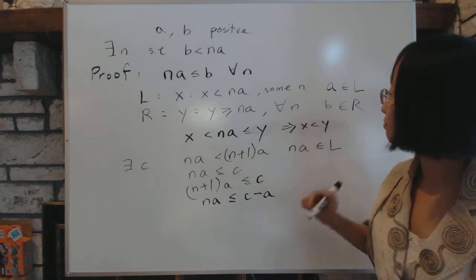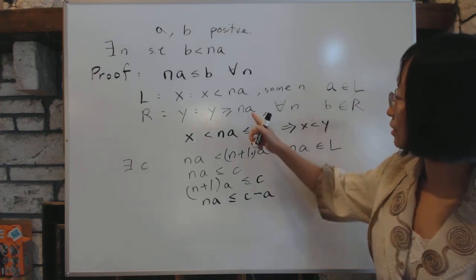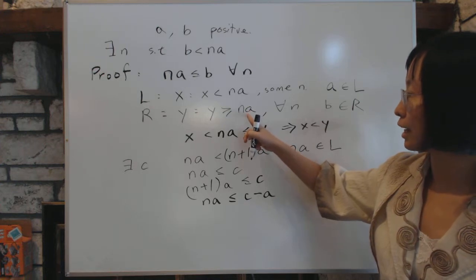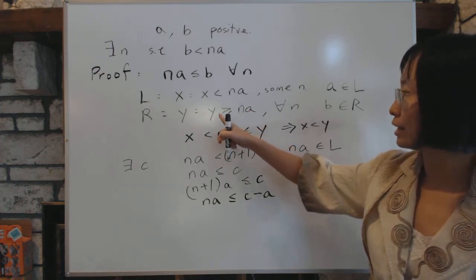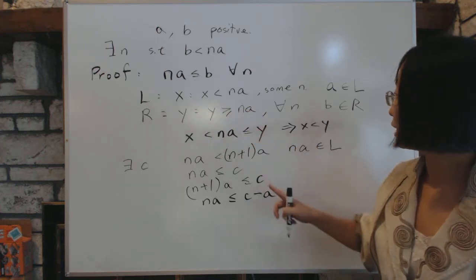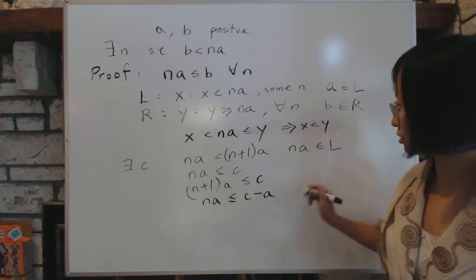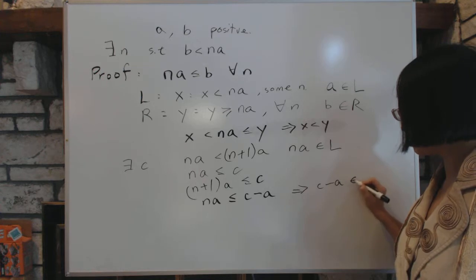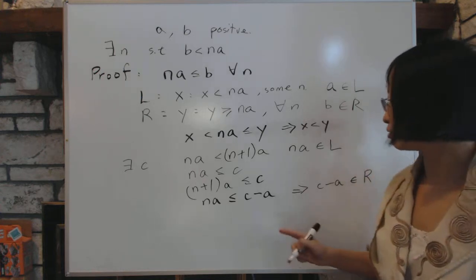Because this satisfies the R condition. See, for all values such that NA, for all N, that NA is less than a certain value, then that value is in R. So, this implies C minus A has to belong to R.